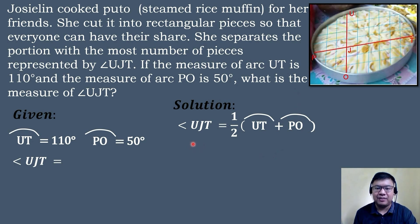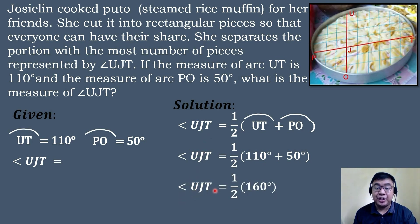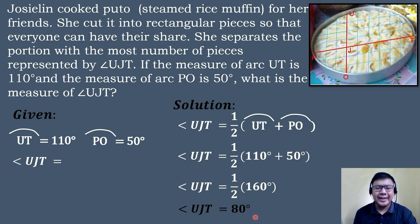Substituting the corresponding values: angle UJT equals one-half times the quantity of arc UT, which is 110 degrees, plus arc PO, which is 50 degrees. Simplifying: angle UJT equals one-half times 160 degrees, which is equal to 80 degrees. So the measure of angle UJT is equal to 80 degrees.